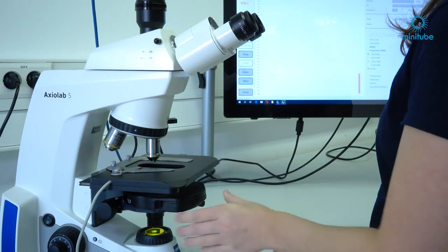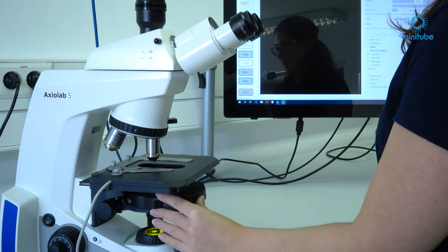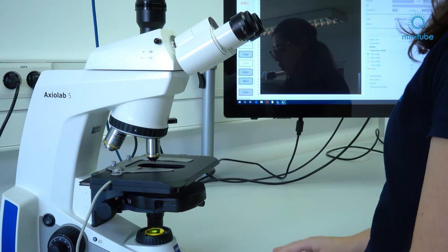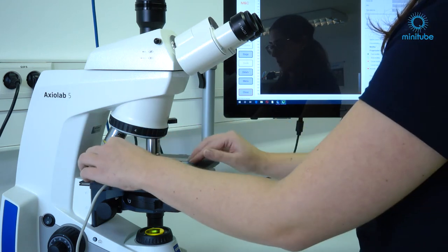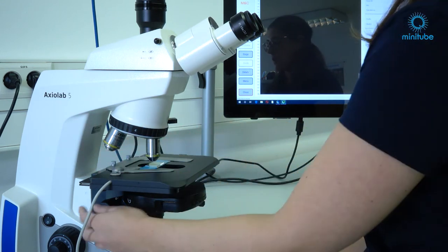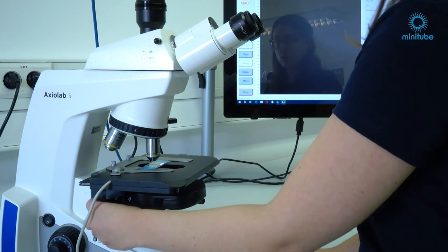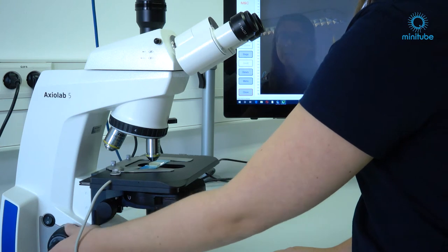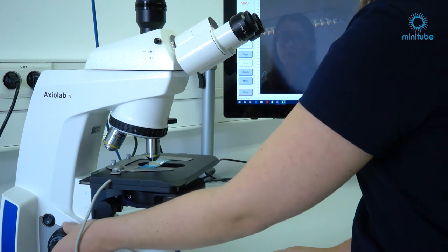At first swivel in the correct objective and make sure that the label of the objective fits to the condenser disc. Next check the light intensity and put a sample onto the stage. Then turn the knurled knob of the condenser to the top stop. Now focus on the sample by using the focus drive.